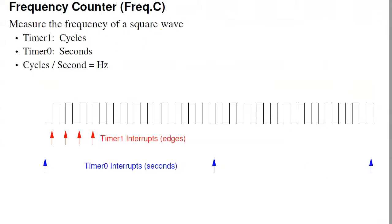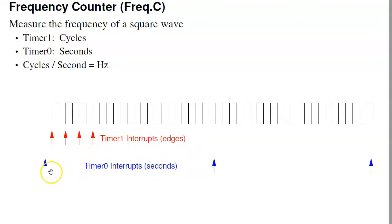Here's another example of what you can do with multiple interrupts: a frequency counter. Frequency is measured as cycles per second, so if I have two interrupts — one measuring cycles and one measuring seconds — I can take the ratio and get cycles per second, or hertz. To do that, I'll use timer 0 to interrupt every one second and timer 1 to count edges. If I look at the number of edges in one second, I've got cycles per second, or hertz.